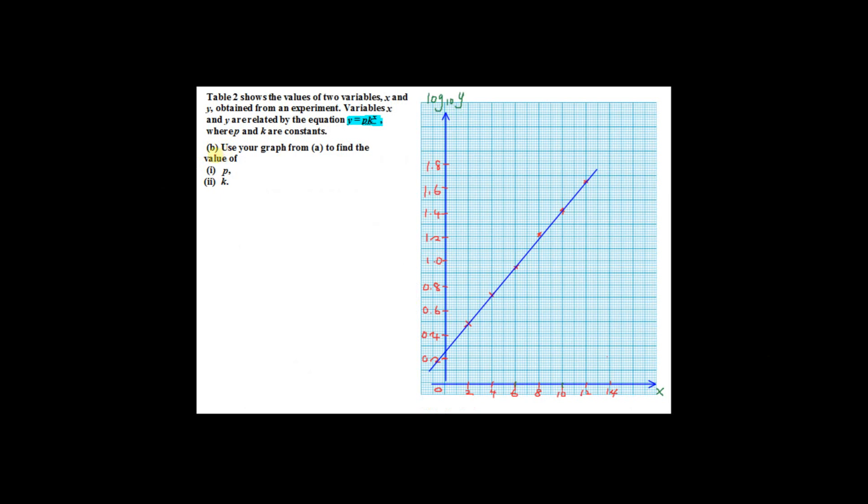Now continue to part B. Use your graph from A to find the value of p and k. To find the value of p and k, we have to start with the original equation, that is y equals pk to the power x. And then convert this to the linear form, that is y equals mx plus c.